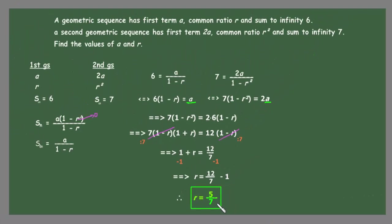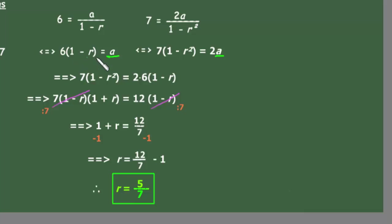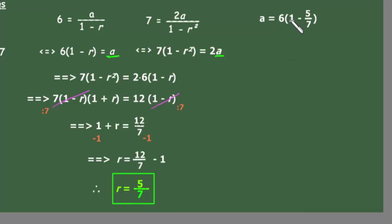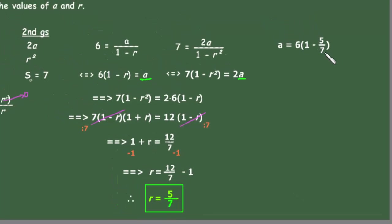Now that we have the common ratio, we substitute r = 5/7 into the simpler equation a = 6(1 minus r). This gives a = 6 times (1 minus 5/7) = 6 times (2/7), which equals 12/7.